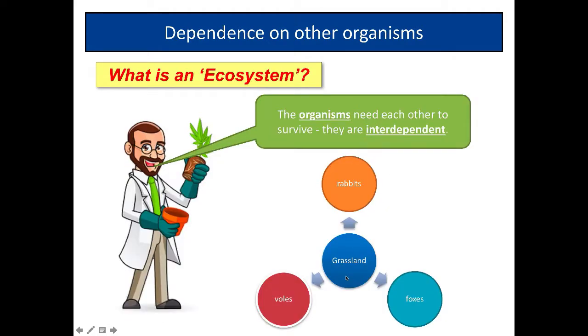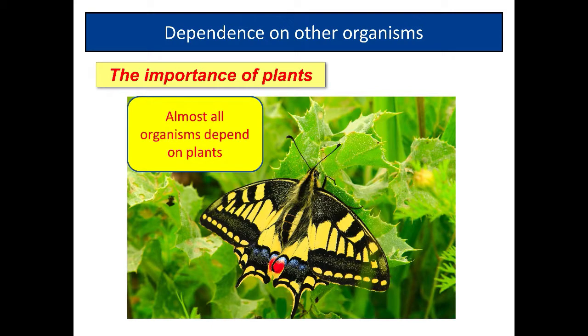In a grassland, for example, you've got rabbits eating the grass, voles eating the grass, and then foxes eat the rabbits and voles. Rabbits and voles depend on the grass, foxes are dependent on rabbits and voles. Everything is dependent on each other—they're interdependent.